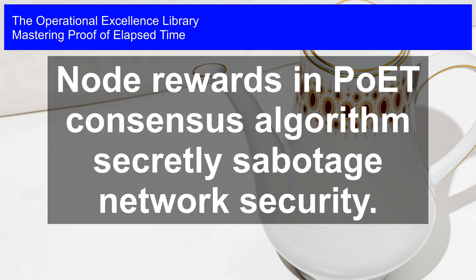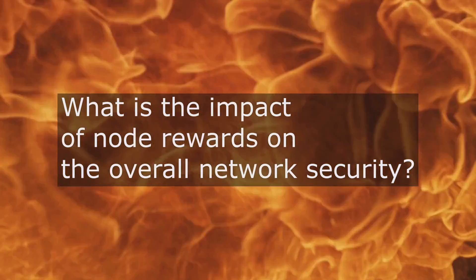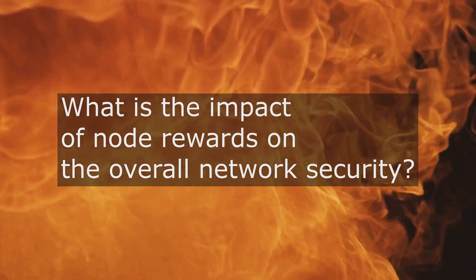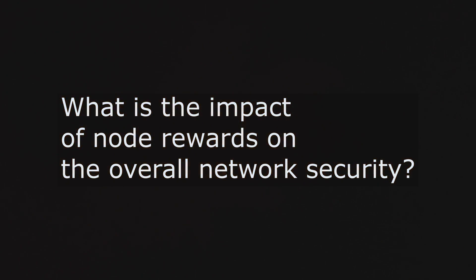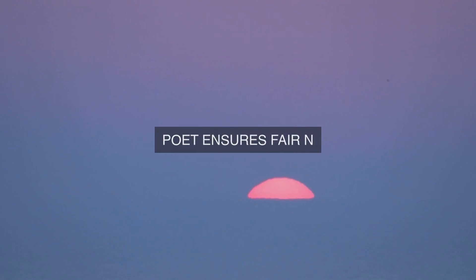Mastering Proof of Elapsed Time. Node rewards in the PoET consensus algorithm secretly sabotage network security. Who among the stakeholders in the Proof of Elapsed Time PoET consensus algorithm can explain the potential consequences of node rewards on the overall network security?